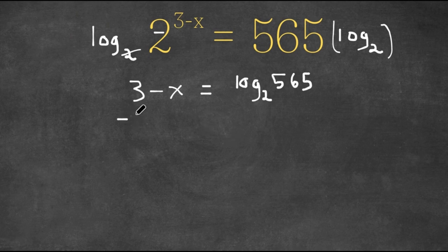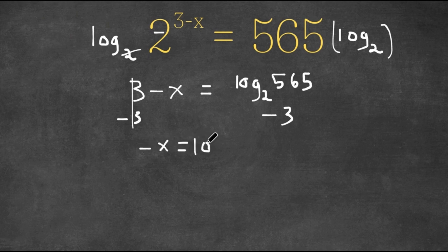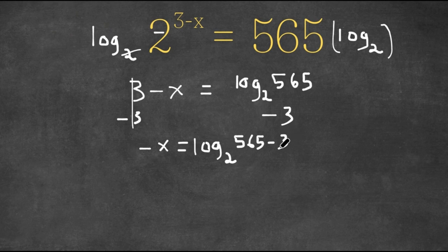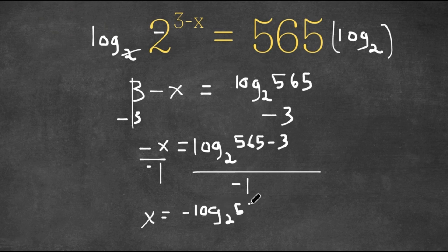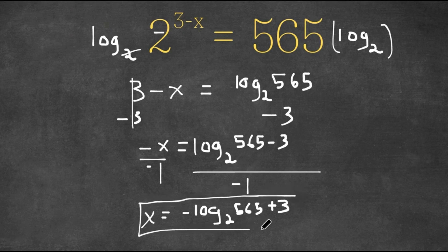If I subtract 3 on both sides to isolate x, these cancel out and on my left-hand side I have negative x is equal to log base 2 of 565 minus 3. And if I divide by negative 1 on both sides to get positive x, I get x is equal to negative log base 2 of 565 plus 3. So this is our answer.